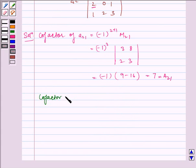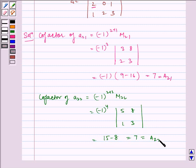Now cofactor of a22 is equal to minus 1 to the power 2 plus 2, M22, which is equal to minus 1 to the power 4 into determinant 5, 8, 1, 3, which is equal to 15 minus 8, which is equal to 7, and it's our A22.